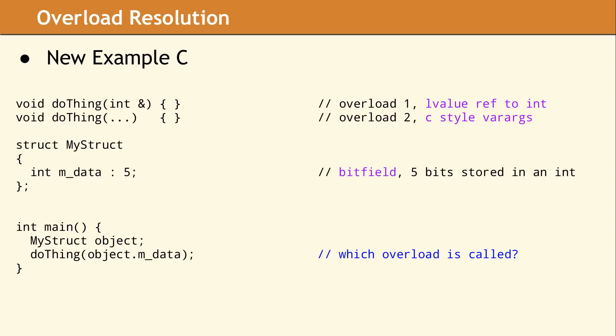As a follow-up on the subject of overload resolution, we would like to present an interesting example. In the main function, we have a call to do thing, and two potential overloads to choose from. The first overload takes an L-value reference to an int. The second overload uses a C style var args parameter list, which can receive nearly any data type. Since the data being passed in main has a data type of int, the first overload is a viable candidate. Int is also a valid argument for a C style var args function, so the second overload is also viable. Based on the rules of overload resolution, the second overload is not considered as good as the first candidate. So the first overload is chosen.